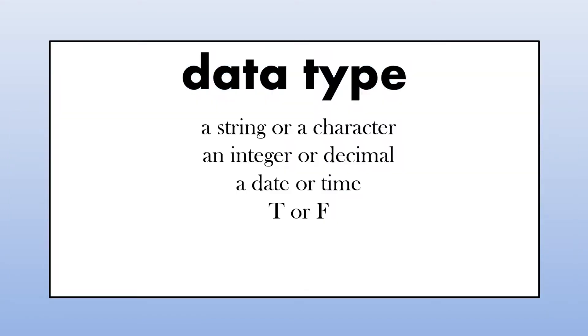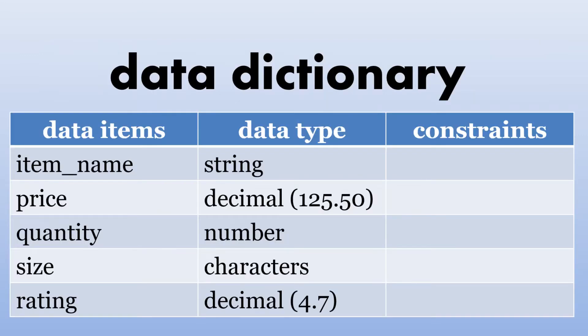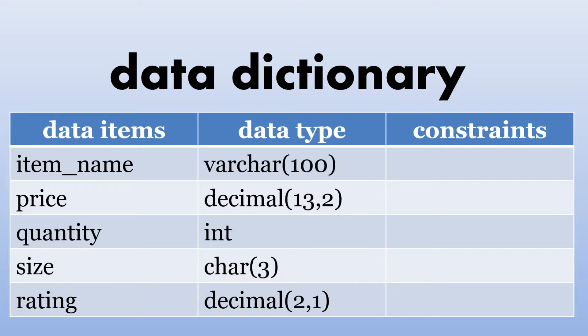What type are they? Well, if it's a word or a sentence or a character, it's going to be a string or a character. If it's a number, it's going to be an integer or a decimal. Maybe a date or time, or even a field that's just true or false. So that would be the data type. In our data dictionary now, we have our data types with our data items.